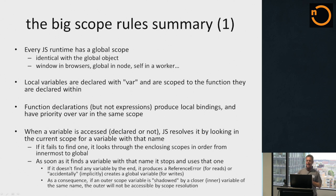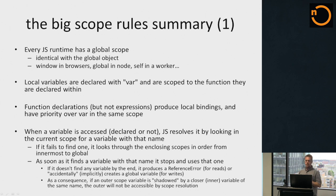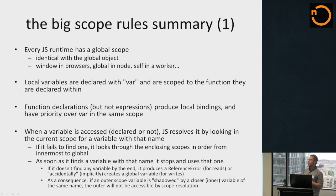When a variable is accessed, JavaScript resolves it by looking in the current scope for a local variable with that same name. If it fails to find one, it starts working its way through the scopes from innermost to outermost, looking for something with that name. As soon as it finds something, it stops, and that's the binding that's used. If it doesn't find any variable by the time it gets out to the global object, then if you're trying to read something, you end up with a reference error. If you're trying to write something, you accidentally create a global.